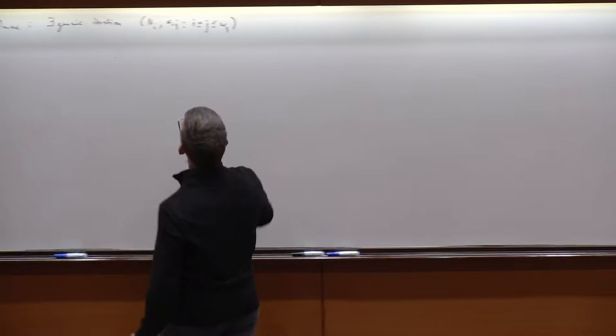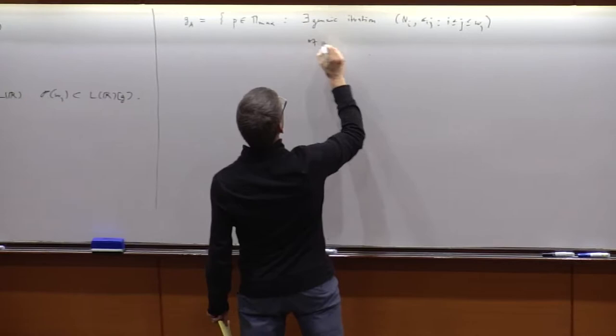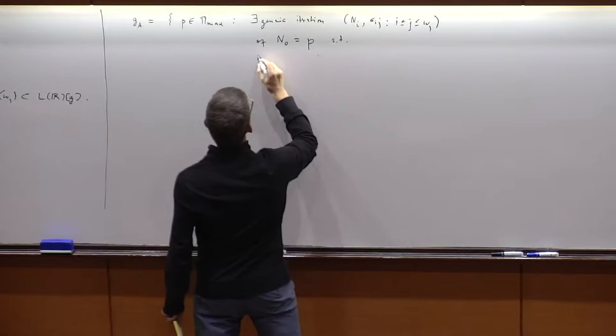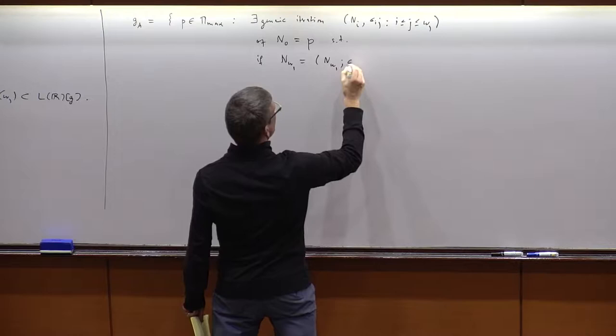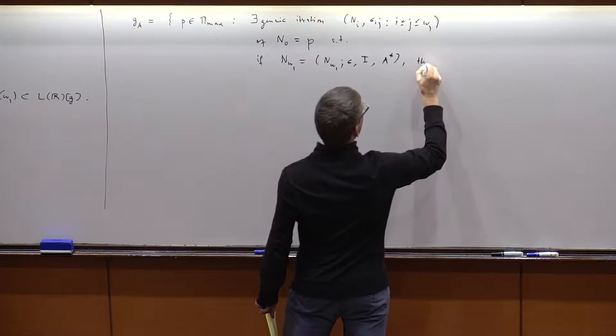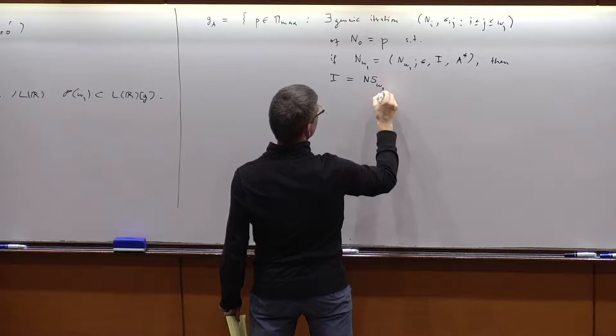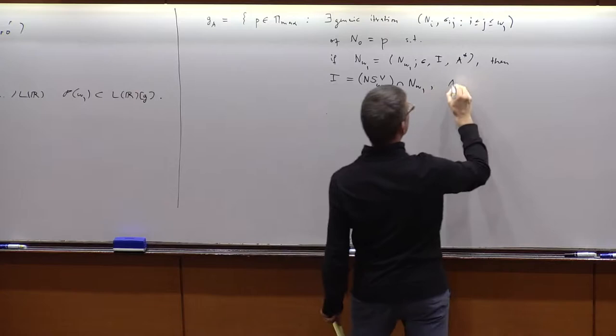So there is a generic iteration of the first model P, such that if you write the last model N_{ω₁} as a universe (ε, I, A*), then I is equal to the true non-stationary ideal of V intersect the last model, and A* is this A.